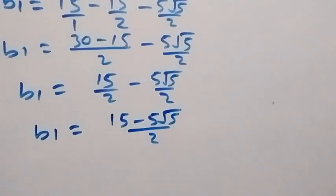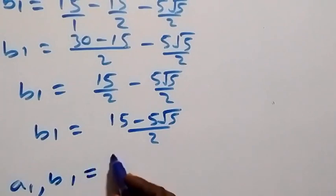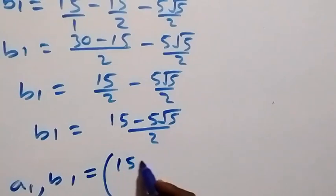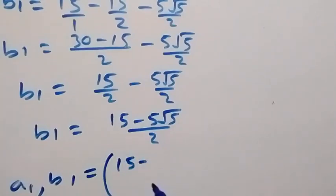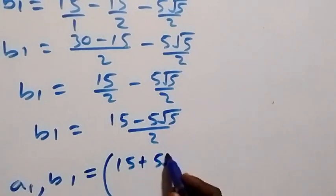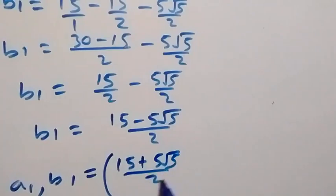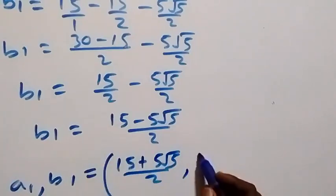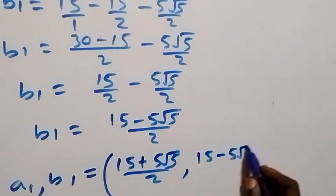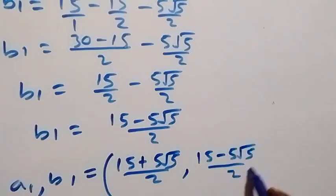The first set of solutions — a1 comma b1 — is: a1 equals fifteen plus five root five over two, and b1 equals fifteen minus five root five over two.